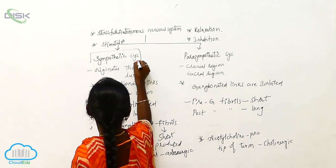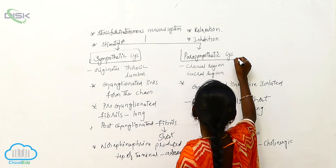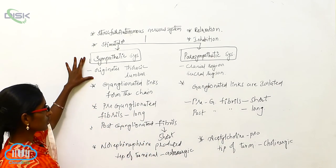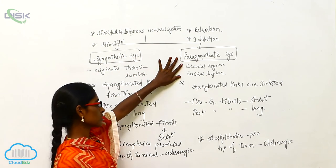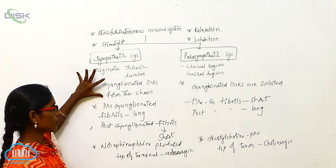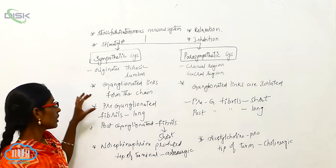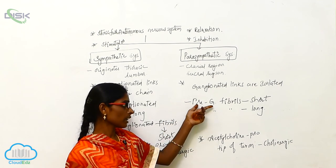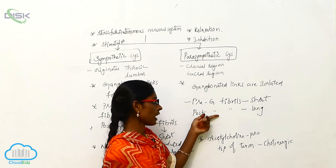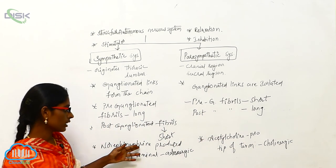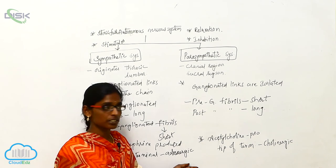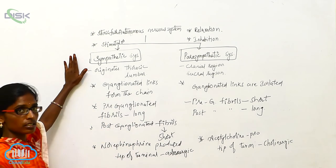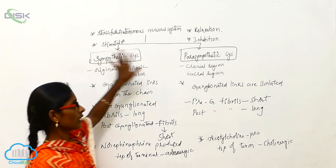To summarize: the sympathetic and parasympathetic systems are both included in the autonomic nervous system (ANS). The sympathetic system originates from the thoracic and lumbar region; the parasympathetic from the cranial and sacral region. The sympathetic has ganglionated links forming a chain with short preganglionic and long postganglionic fibrils, producing norepinephrine (adrenergic). The parasympathetic has isolated ganglionated links with long preganglionic and short postganglionic fibrils, producing acetylcholine (cholinergic). The sympathetic system is a stimulator causing stress; the parasympathetic is inhibitory causing relaxation.